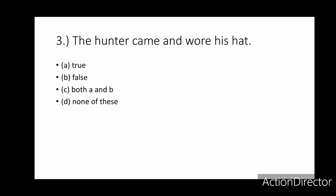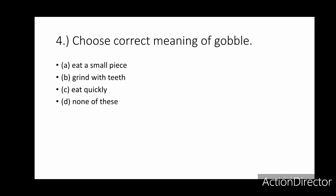The third one: 'The hunter came and wore his hat.' This is a true-or-false related question. You have to state whether the sentence is true or false — four options are given, you have to select the right one. Fourth one: choose the correct meaning of 'gobal.' The meaning of the word 'gobal' — you have to select from the given options.